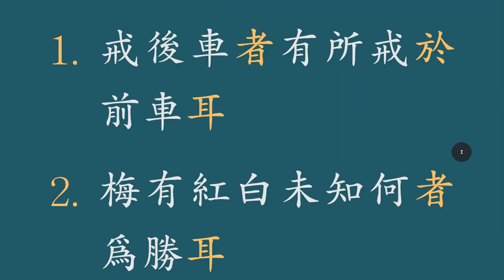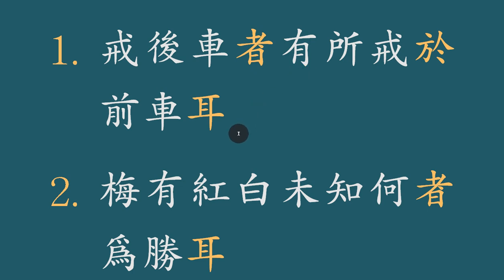개후거자는 유소개어전거이라. 경계할 개자지요. 후거자가, 즉 뒤에 있는 수레가 경계하는 것은 유소개어전거이라. 앞 수레에서 경계할 바를 둘 뿐이다. 앞에 가는 수레가, 요즘 말로 말하면 앞에 가는 자동차가 엎어지거나 사고가 나면 그것을 경계해야 된다라는 말이죠.